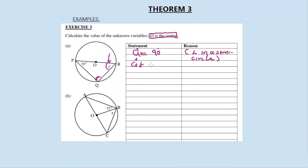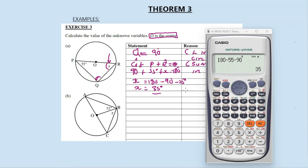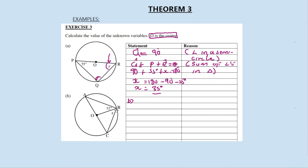Angle Q is equal to 90 degrees — angle in a semicircle. So setting up the equation for the triangle: 90 degrees plus 55 degrees plus x equals 180 degrees. Therefore x equals 180 minus 90 minus 55 degrees. x equals 35 degrees.